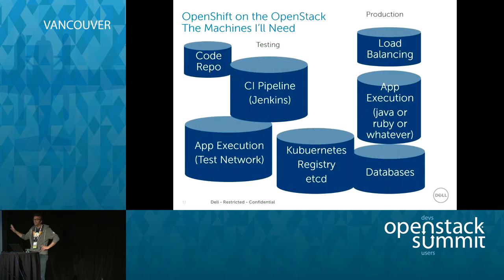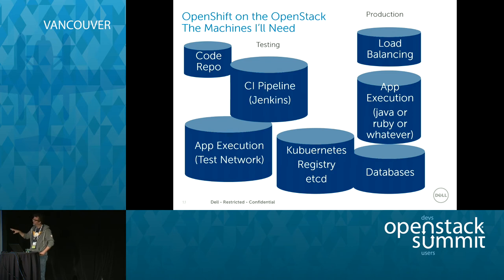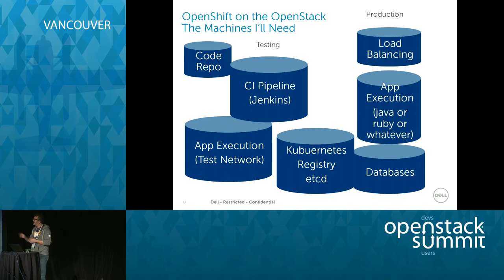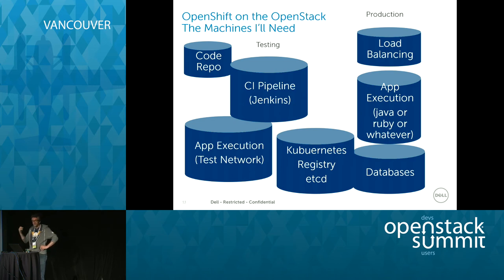This is the Red Hat recommended layout of virtual machines. On the left, a separate virtual machine or two would hold your code, and you'd be checking that code into OpenShift, hitting a Jenkins pipeline to ensure it passes all tests and compiles correctly. Then there's an app execution test network for QA. All checking into the central Kubernetes registry with ETCD. When you're ready for production, it's just bringing those same containers into production — perhaps doing a load balancer drain — allowing you to run Java or Ruby applications off of databases that are also containerized.